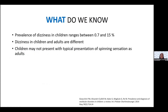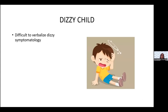The prevalence of dizziness in children ranges between 0.7 and 15%, though the numbers may actually be higher. Dizziness in children and adults are different — children don't typically present with spinning sensation as adults do. Managing a dizzy child may be challenging. The first challenge is that a child finds it difficult to verbalize dizzy symptomatology.